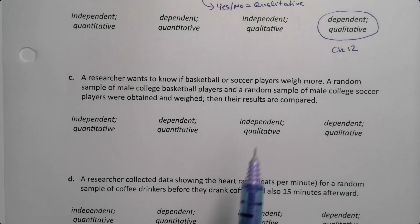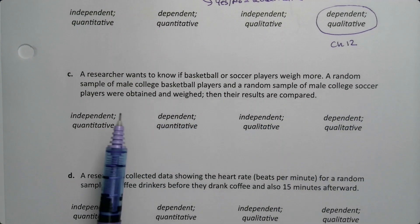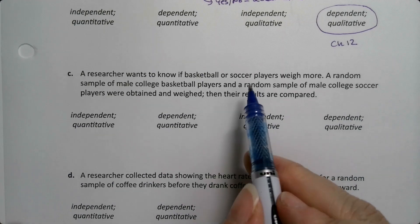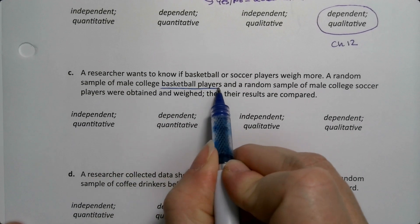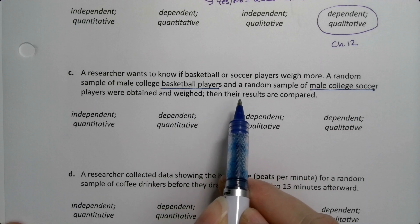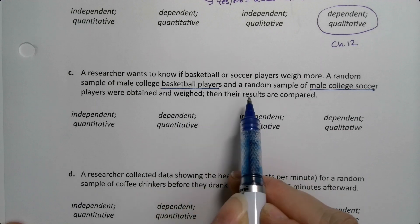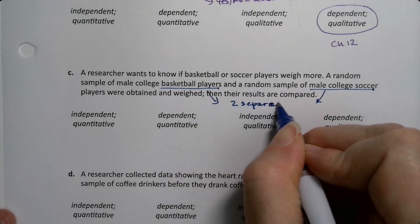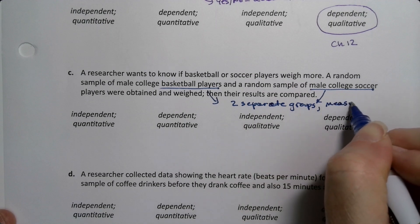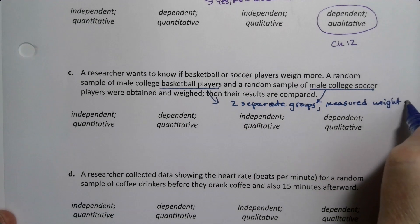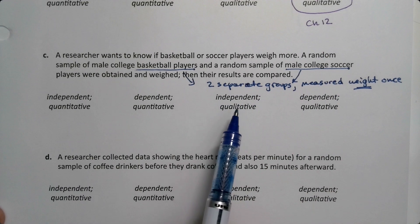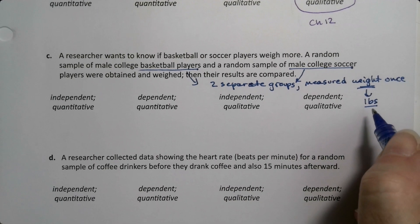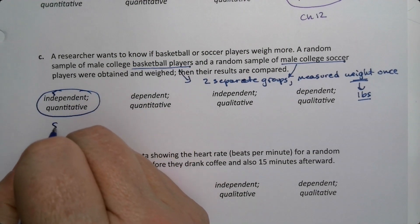A researcher wants to know if basketball or soccer players weigh more. A random sample of male college basketball players and a random sample of male college soccer players were obtained and weighed, then the results are compared. That's two separate groups — we're not measuring them before and after the season; it's just two separate groups. We're measuring the weight one time. Two separate groups means it's independent. And since we're measuring weight — weight is in pounds, that's quantitative — it's going to be section 11.3.